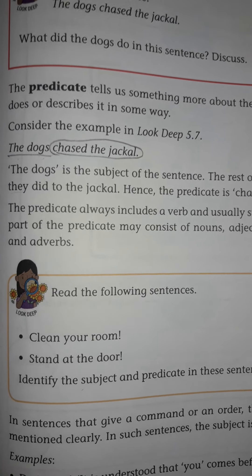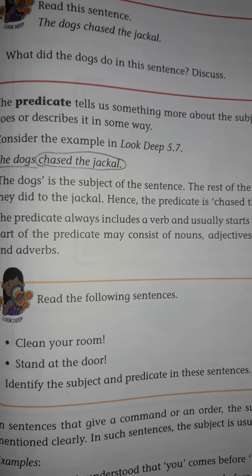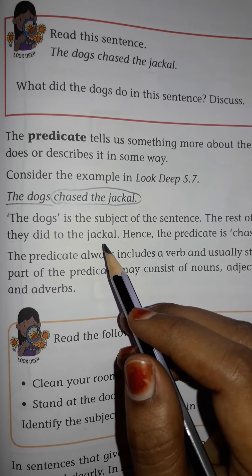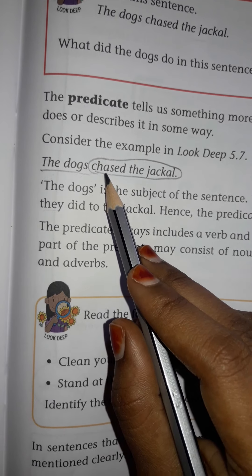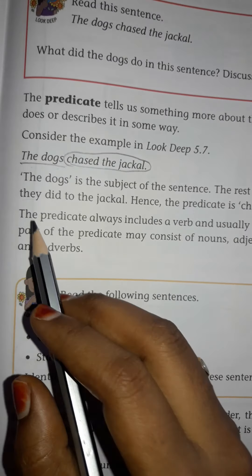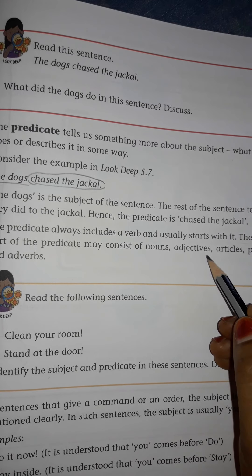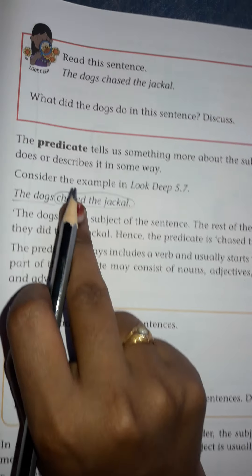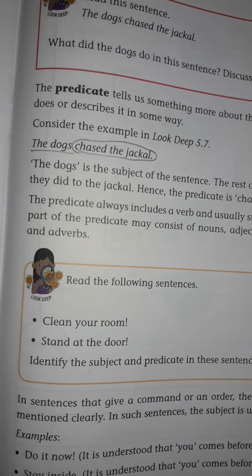The predicate always involves a verb, and the predicate usually starts with that verb. Remember that. The remaining part of the predicate may consist of noun, adjective, article, preposition, and adverb.